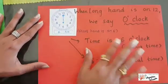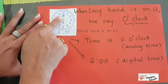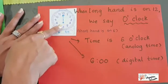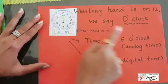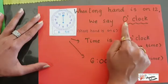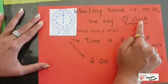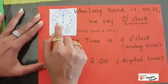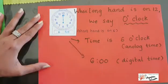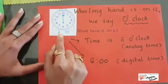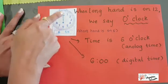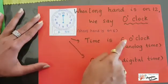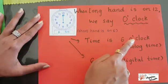Now look at this. We've got a time here. The long hand is on 12 and the short hand is on 6. When the long hand is on 12, what do we say? We say it as o'clock. This is how you write o'clock. The short hand is on 6, so how do we read this time? We say this as 6 o'clock. That's how you write 6 o'clock.